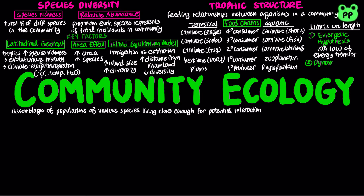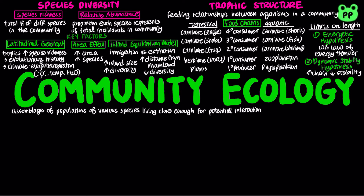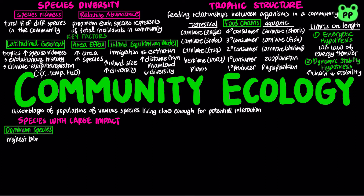The dynamic stability hypothesis proposes that long food chains are less stable than shorter ones. Dominant species are those that are most abundant or have the highest biomass, which is the total mass of all individuals in a population. Dominant species exert powerful control over the occurrence and distribution of other species.